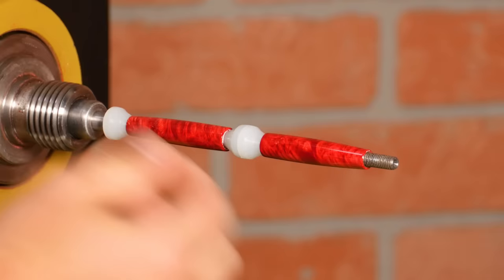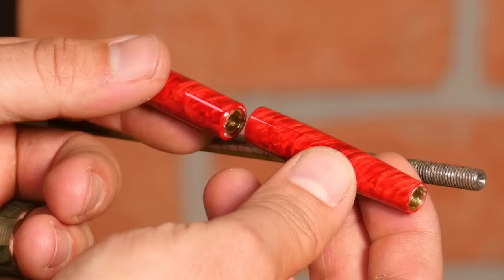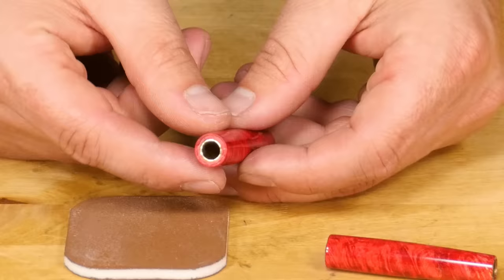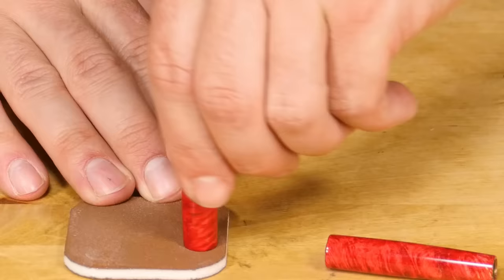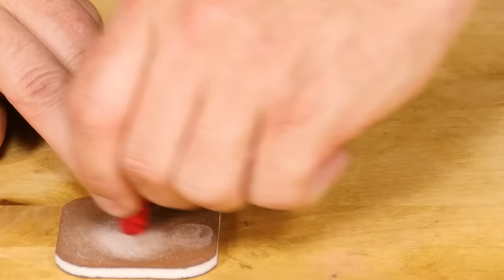After polishing, remove the pen blanks from the mandrel and remember their proper order for grain alignment. The ends will likely have a small amount of CA glue on the end that can be removed by hand using some 1500 grit sandpaper.